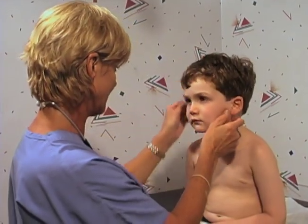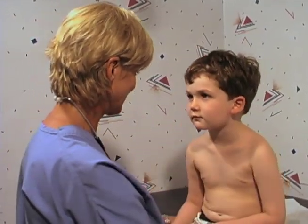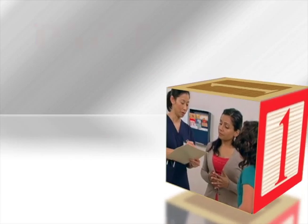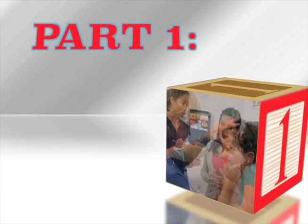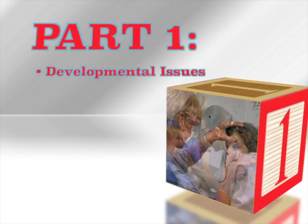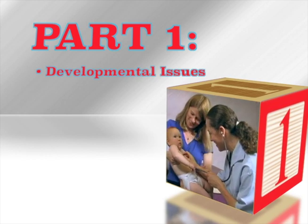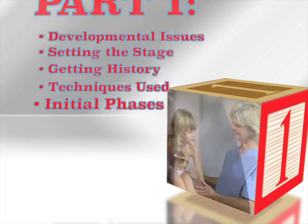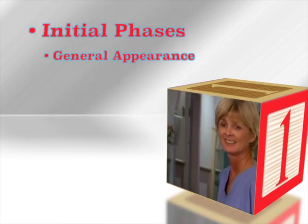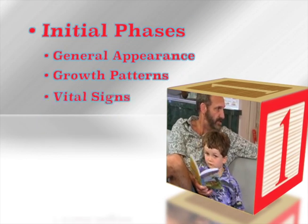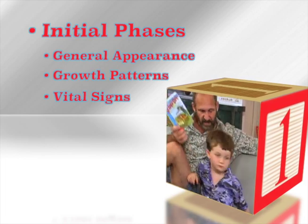Part 1 of this series began with a brief discussion of developmental issues to be considered when performing a physical examination of a child. Next, the evaluation process, including looking at the child's general appearance, checking his growth patterns, and taking his vital signs were explained and illustrated, as well as how to approach and minimize the stress during the process.